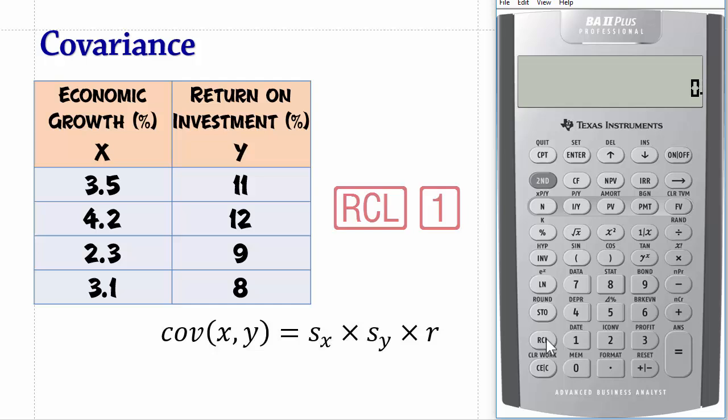Press Recall 1 times Recall 2 times Recall 3. Press the equal button and that gives the covariance as 1.333.